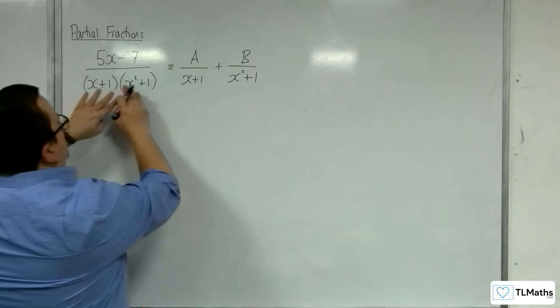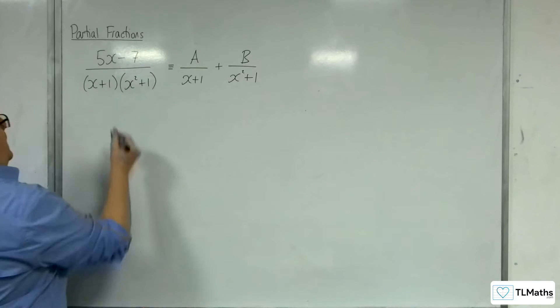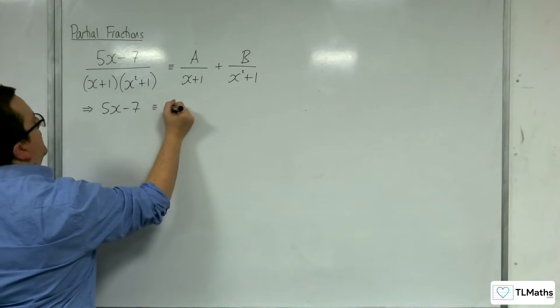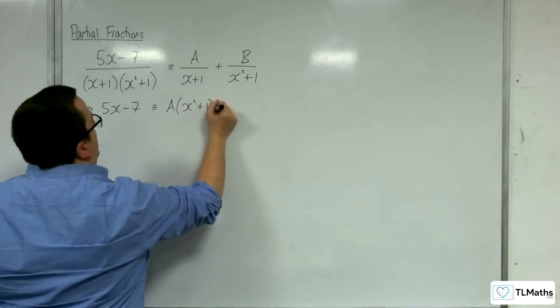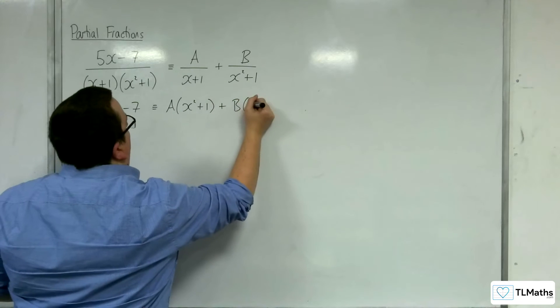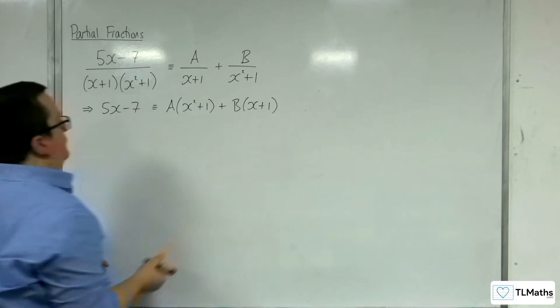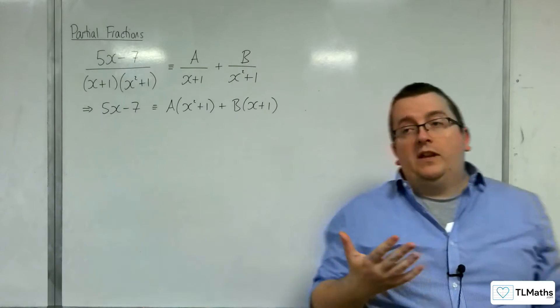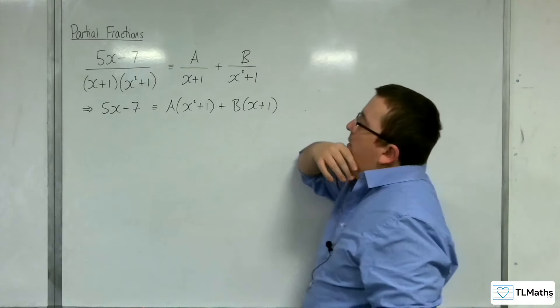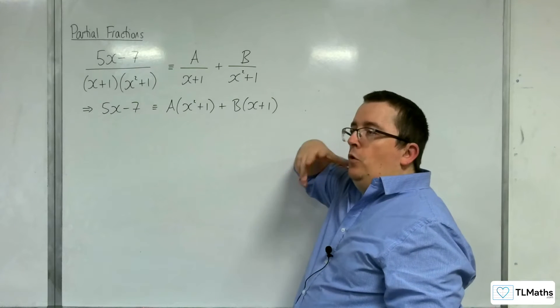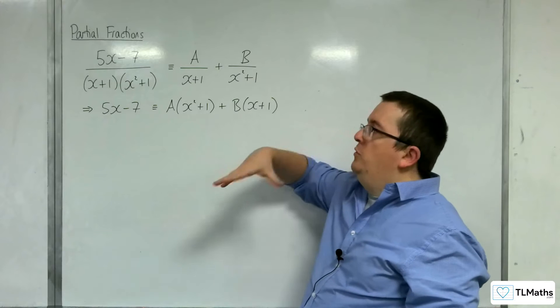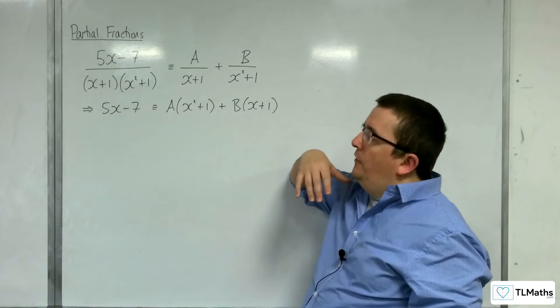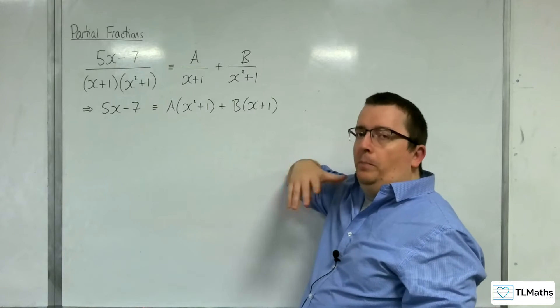We're going to multiply both sides by the x plus 1, x squared plus 1. And I will be left with 5x take away 7 on the left hand side, and we'll have A times x squared plus 1 plus B lots of x plus 1. Now if this was the case, I don't use comparing coefficients as a method as my go-to method. However, in this case, it is particularly useful.